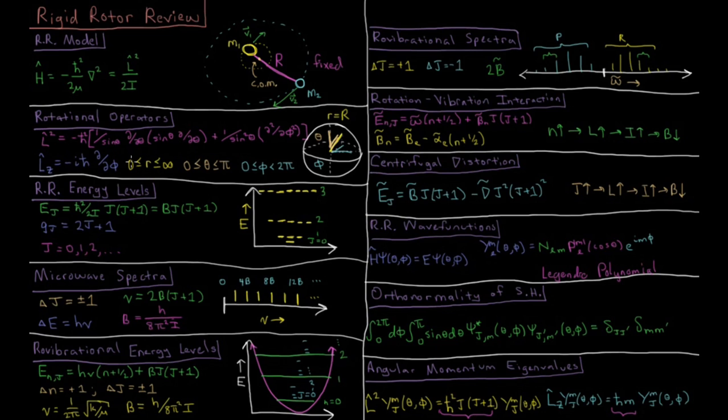Where r can go from 0 to infinity, distance from the origin, theta is the angle from the z axis going from 0 to pi, and then phi is the angle around the x-y plane going up from 0 all the way to 2 pi.